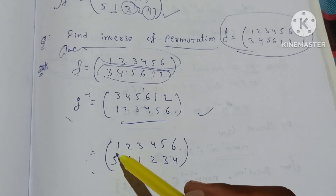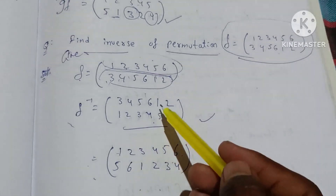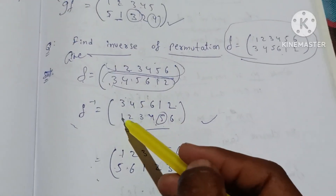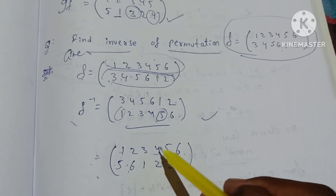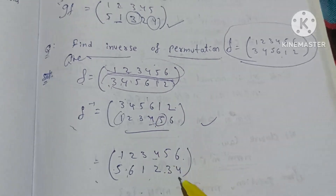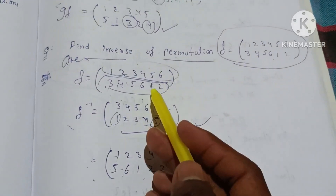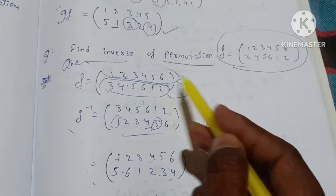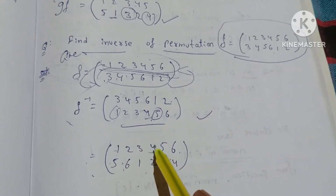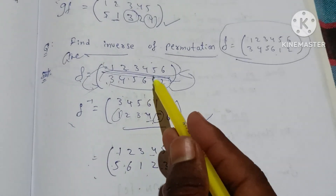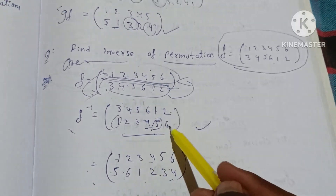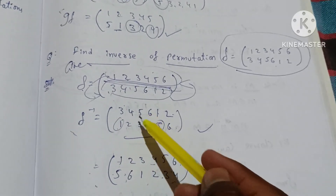Now look at each value: 1→5, 2→6, 3→1, 2→4, 4→2, 5→3, 3→4, 6→4. The inverse is not the same value in the first value situation. Making the same values: 1, 2, 3, 4, 5, 6. We make the values: 1 equals 1, 1 equals 5, 2 equals 6, 3 equals 1, 4 equals 2, 5 equals 3, 6 equals 4. So this will be the inverse.